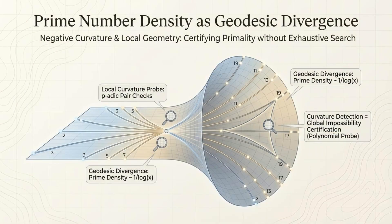Prime number density can be seen as geodesic divergence, linking negative curvature and local geometry to primality certification. We use a local curvature probe for pairwise pair checks. Curvature detection allows for global impossibility certification via a polynomial probe.